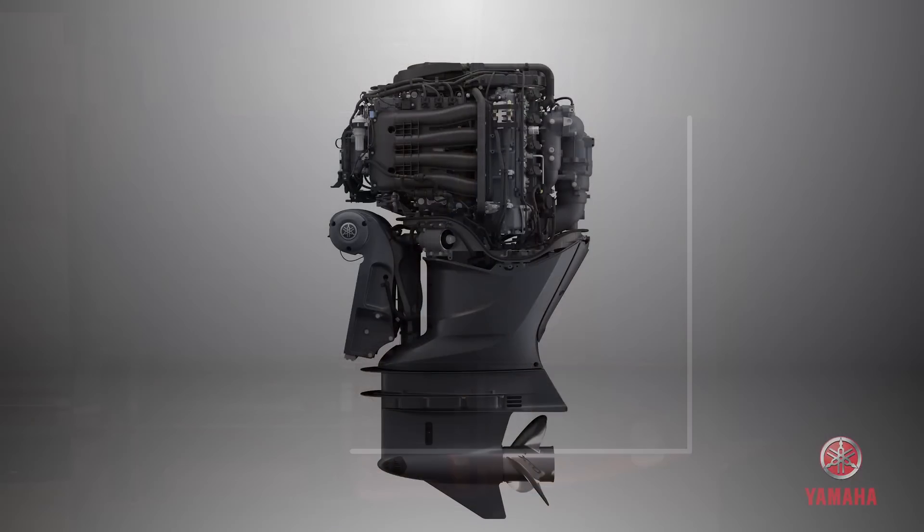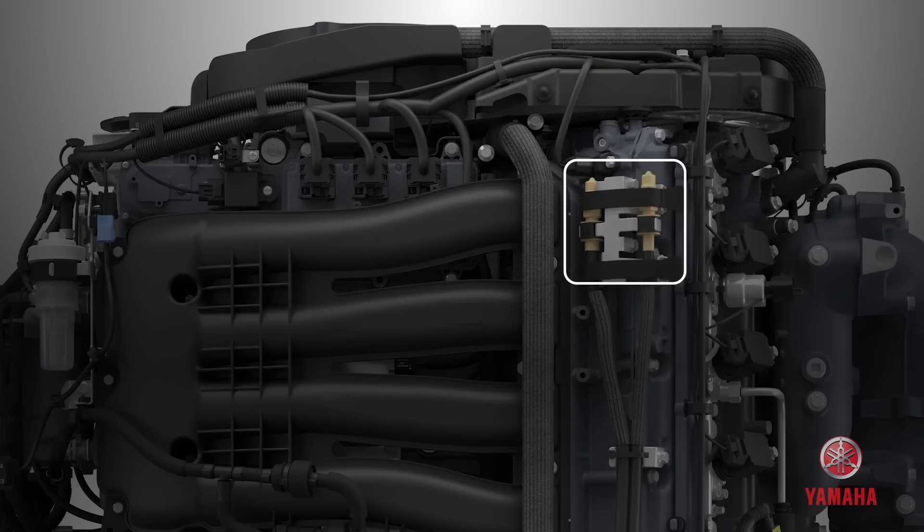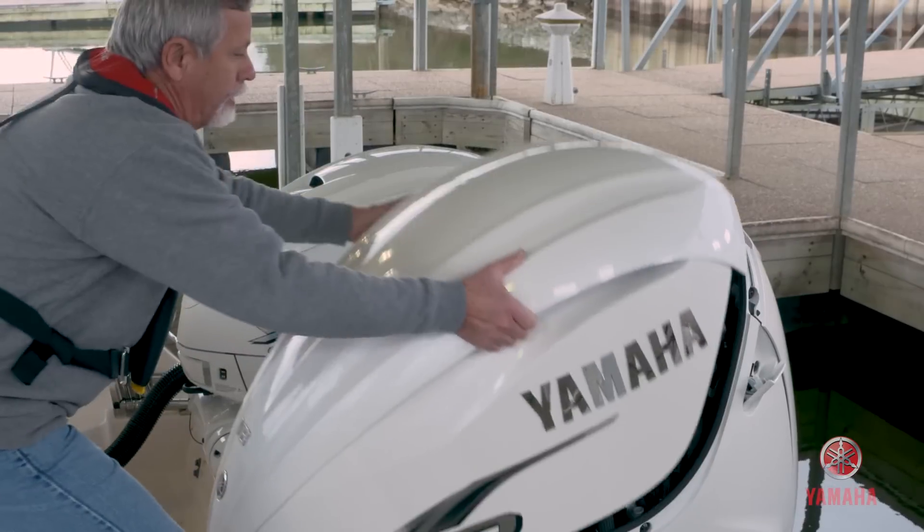The next step is to connect the air and oil quick disconnect fittings. On the outboard, the fittings are located on the port side of the power head and can be easily accessed by removing the top cowling.